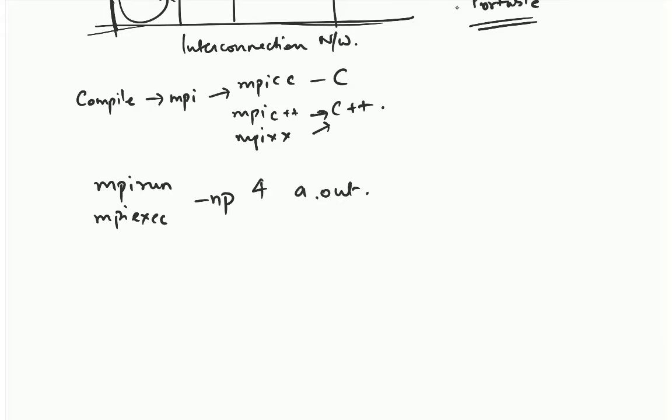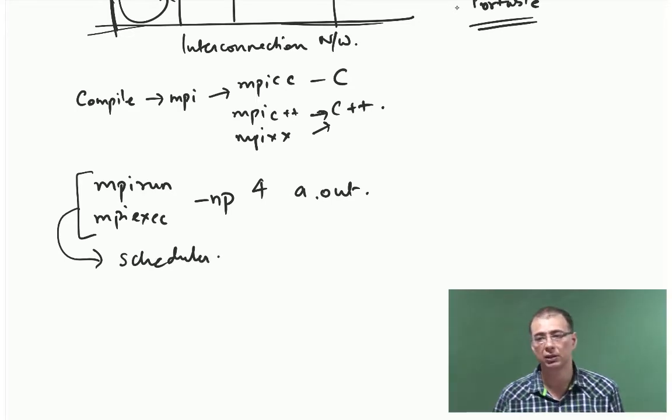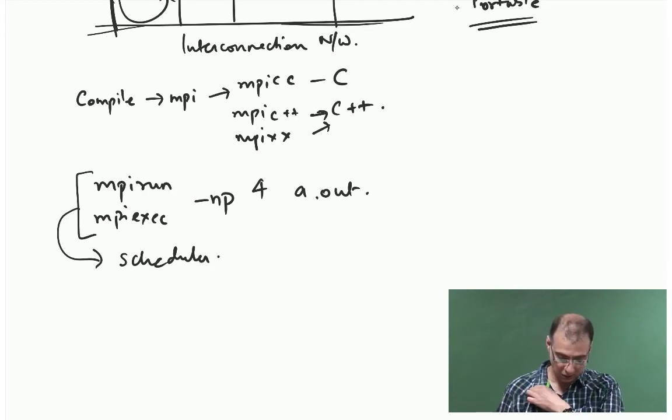When you give this command it goes to a scheduler for that system. The scheduler then figures out where to launch the processes. If it is a large cluster, it may launch them on 4 different nodes.